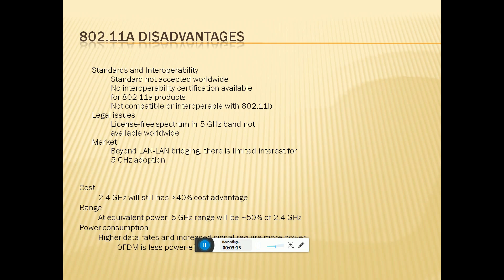The 802.11a disadvantages include interoperability and non-interoperability, certification availability, non-compatibility, and limited spectrum. The 5 GHz band is not available worldwide. There are limited interest and fewer 5 GHz adapters. The cost of 2.4 GHz equipment is still about 40% less, and equivalent 5 GHz range requires 50% more 2.4 GHz power consumption.